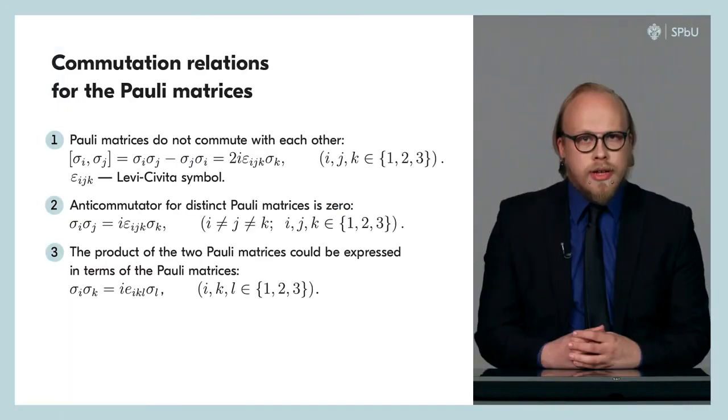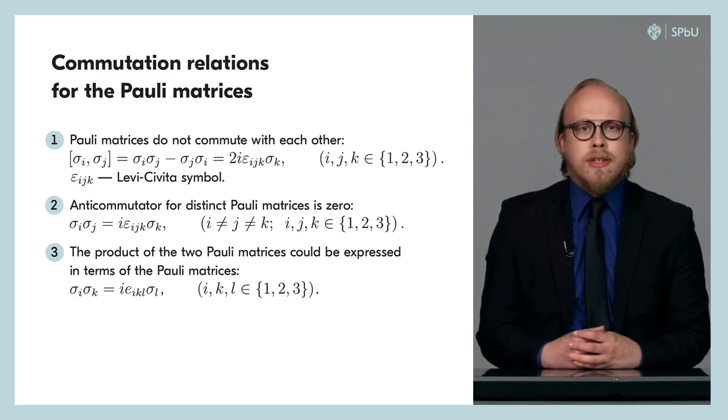The second permutation property: if two different Pauli matrices are given, their anticommutator is 0. The third permutation property: the product of two arbitrary but different Pauli matrices results in the third Pauli matrix multiplied by the complex unit and the Levi-Civita symbol. Thus, taking into account the fact that the square of any Pauli matrix is equal to the identity matrix, we can say that in the product of arbitrary Pauli matrices, we always get either the identity matrix or one of the Pauli matrices. And this follows for any number of factors.